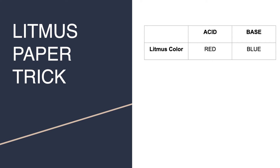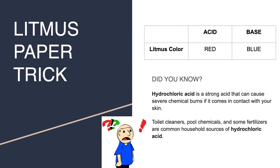So here's the fact that we need to remember. In this table you can see that acid makes the litmus paper turn red and base turns it into blue. Let's just focus on acids for a second — you know the thing about acids, right? Yes, acids are dangerous.